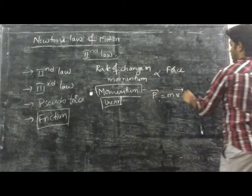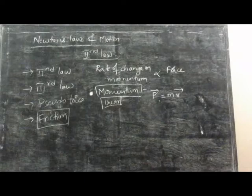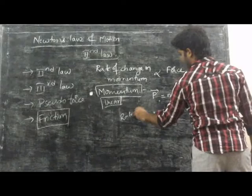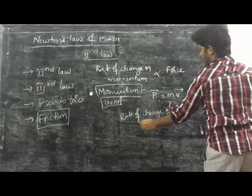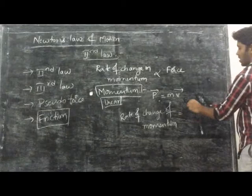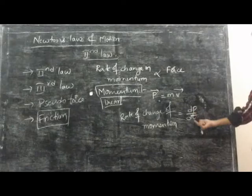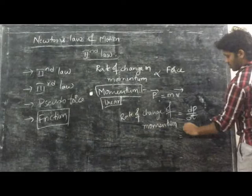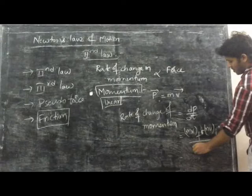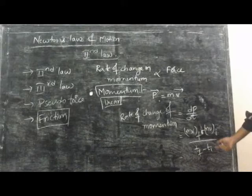Linear momentum of a body is defined as P = mv, the product of mass and velocity. The rate of change of momentum is dP/dt, which is nothing but (mv_final − mv_initial) / (t_final − t_initial). So this is the rate of change of momentum of a body.